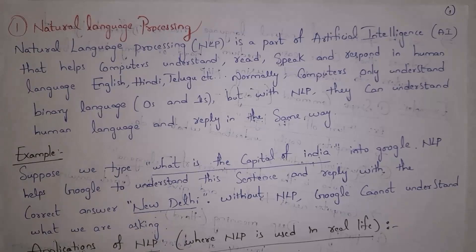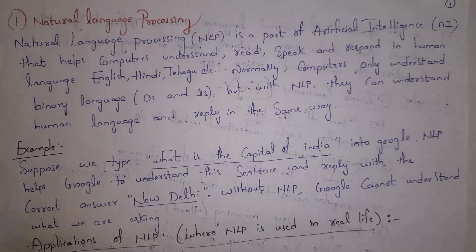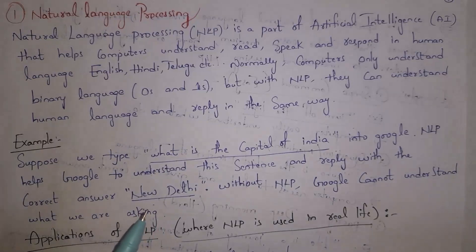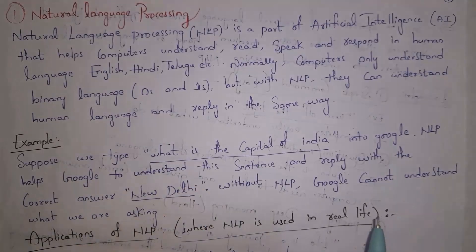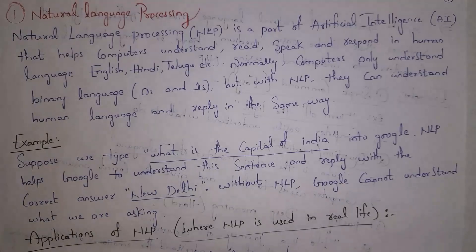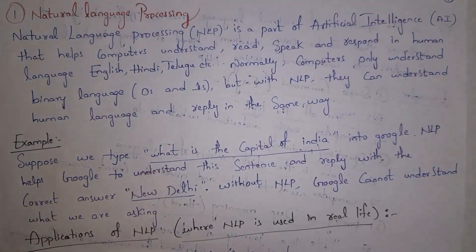Here is a simple example of NLP. If I open Google and type 'what is the capital of India', Google will give me the answer: New Delhi. This happens because of NLP. Whenever I type any textual sentence in Google in any language, Google will understand it using NLP and then reply to our sentence. Without NLP, Google cannot understand what we are asking. Natural language means the language we speak like Telugu, Hindi, English, and processing means how computers understand, read and speak in human language.